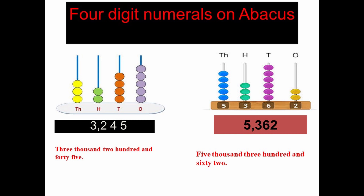In the next abacus example: ones place has two beads, tens place has six beads, hundreds place has three beads, and thousands place has five beads. So the number is five thousand three hundred and sixty two (5362). I have written this in words as well — you can copy this in your notebook.